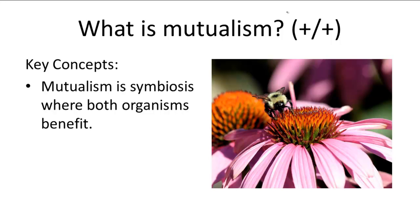A relationship between two organisms is mutual when both organisms benefit. Mutualism is a symbiotic relationship, and this means that the two organisms involved have a very close association, so they live in very close proximity and come in contact with each other often.